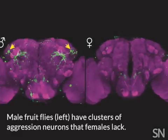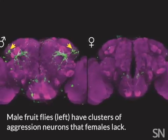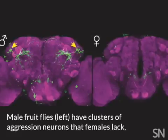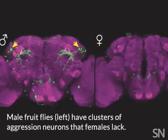Whether you're a fly or a mouse, rage networks may be wired differently in males and females. But across the animal kingdom, sex and violence seem to be closely linked.